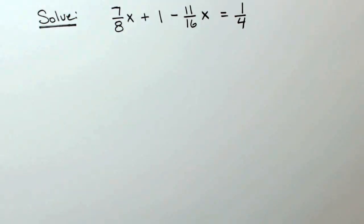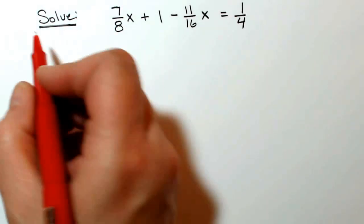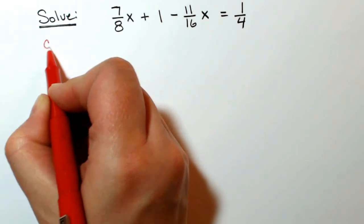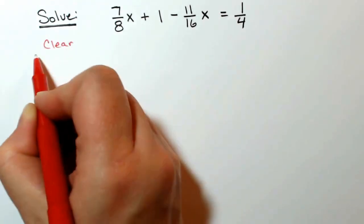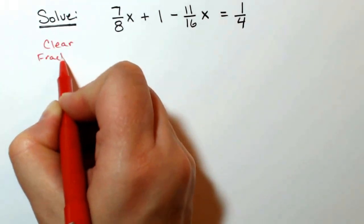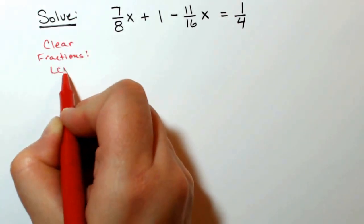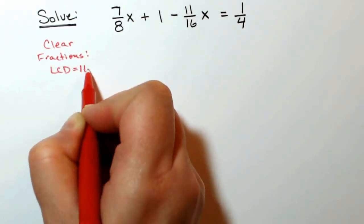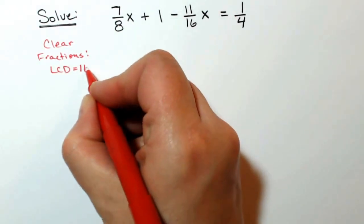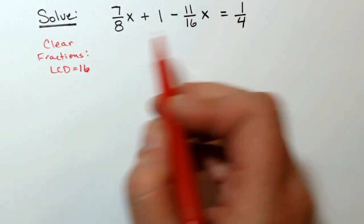In order to clear fractions, I need to find the least common denominator. In this case, the least common denominator of the fractions is 16. So I'm going to multiply both sides of the equation by 16.